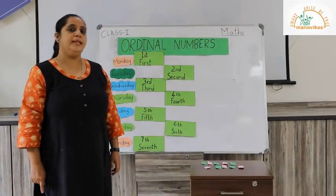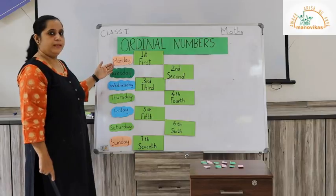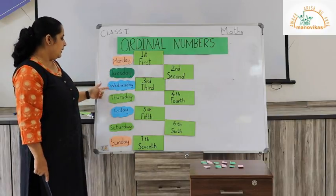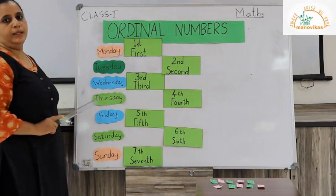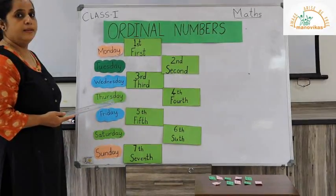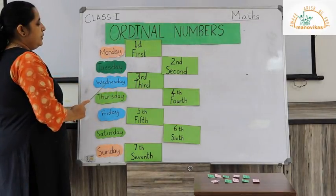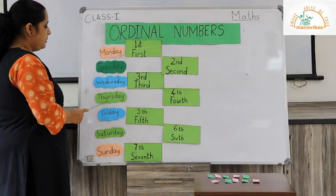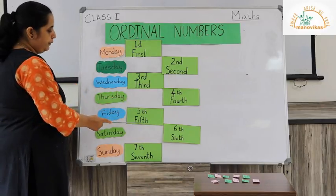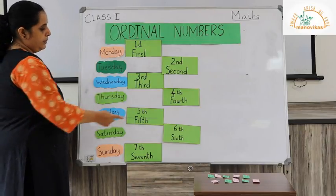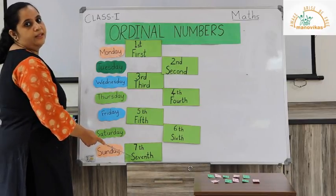Okay children, let us move on to the second example — the days of the week. We have seven days: Monday, Tuesday, Wednesday, Thursday, Friday, Saturday, Sunday. If Monday is the first day of the week, which will be the second day? Tuesday will be the second day. Wednesday will be the third, Thursday the fourth, Friday the fifth, Saturday the sixth, and Sunday will be the seventh day of the week.